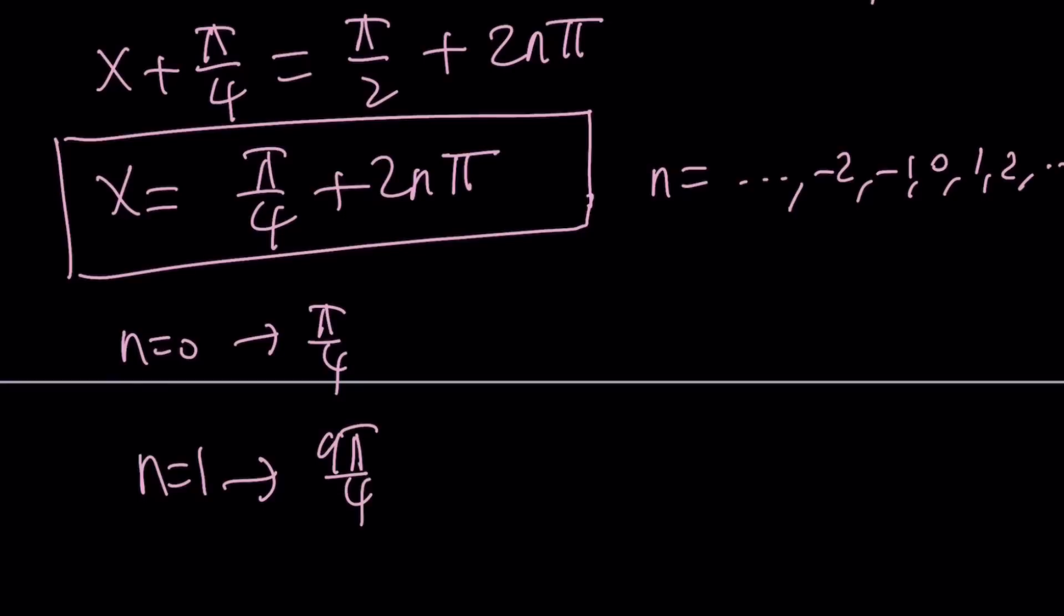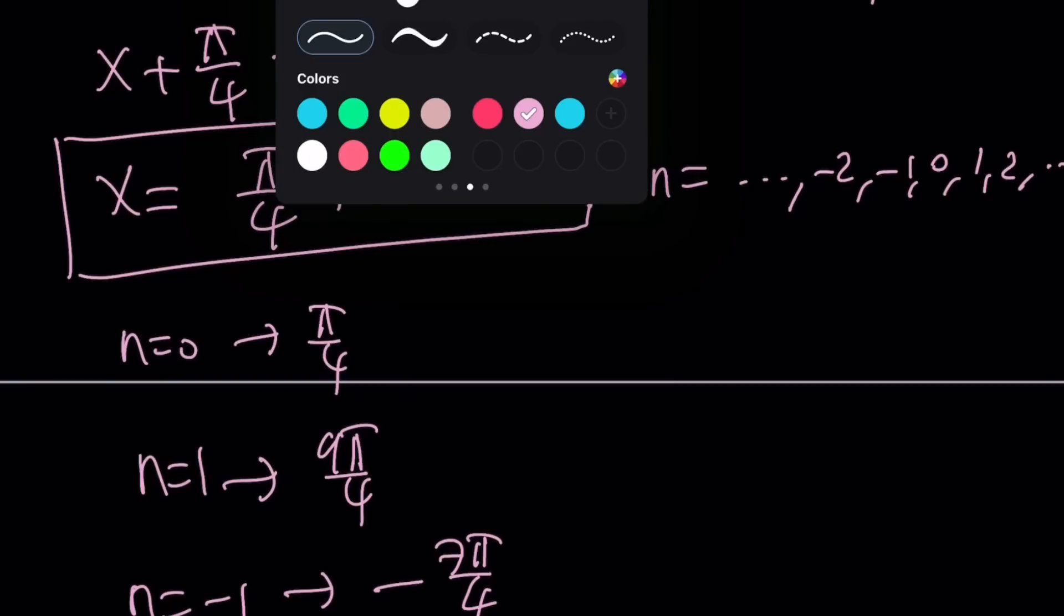If n is negative 1 you get pi over 4 minus 8 pi over 4 which is negative 7 pi over 4 and so on and so forth. So there are infinitely many solutions. Make sense? Okay. So that is the first method and let's go ahead and take a look at the second method.